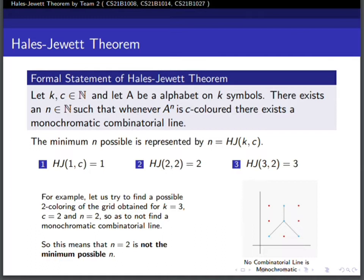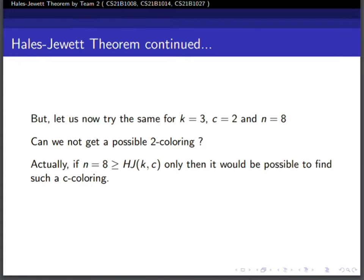But now let's try the same for k=3, c=2, and n=8. Can we get a possible coloring? Actually, only if n is greater than HJ(k,c) would it be impossible to avoid a monochromatic line. This is what the theorem is stating.